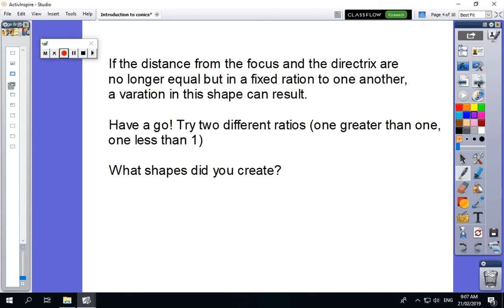Now try it again, and this will take some time. So if the distance from the focus and the directrix are no longer equal but in a fixed ratio to one another, a variation of the shape can result. So I want you to have a go and see what variations you can get. So this would involve to start with, you mark the ruler line near the left hand side of the page and mark the points. So that's a focus, four centimeters from the line.